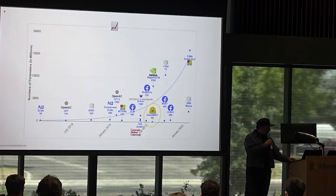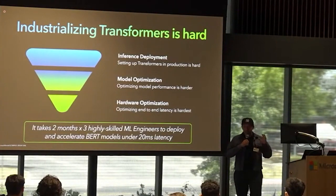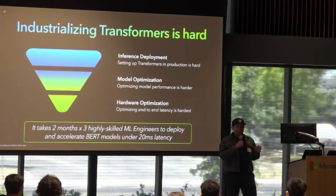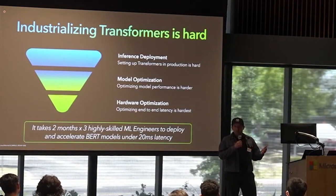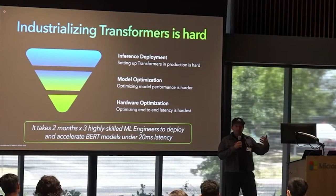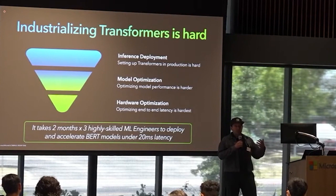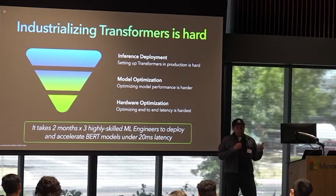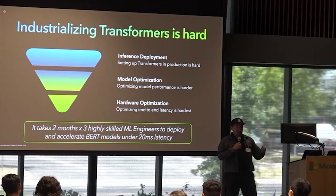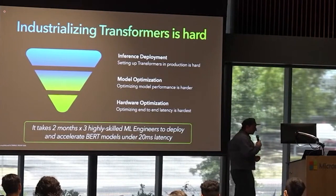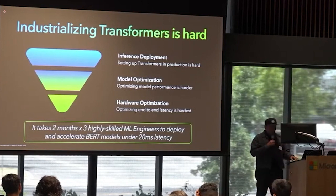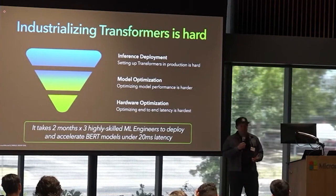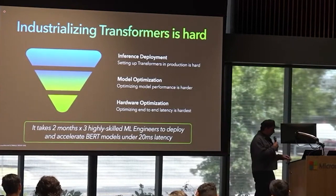That's why we decided to create Optimum — a specific library focused on the acceleration of Transformers models from training to inference. To reduce latency from a vanilla PyTorch or TensorFlow model to something usable for real-time, cost-effective use cases, you need to work through three layers of complexity: model graph editing, accelerating inference, and hardware-specific optimizations to get everything down to millisecond levels.